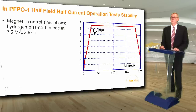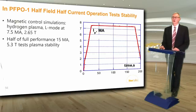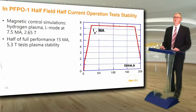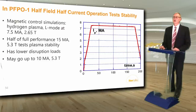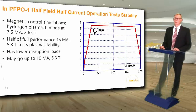The next plasma scenario milestone in PFPO1 is half full performance at 7.5 megamps and 2.65 tesla in L-mode, with a 150-second long flat top in plasma current. These half performance plasmas provide good tests of plasma stability — nearly equivalent to full performance — but with lower disruption loads. If all goes well, we may increase the plasma current up to 10 megamps at 5.3 tesla to finish the PFPO1 phase.